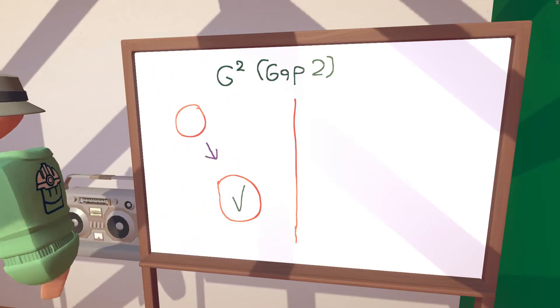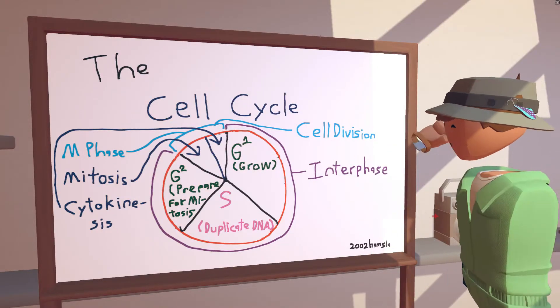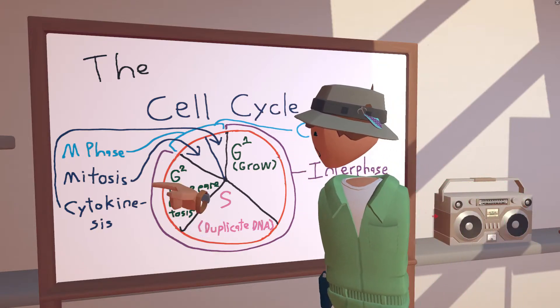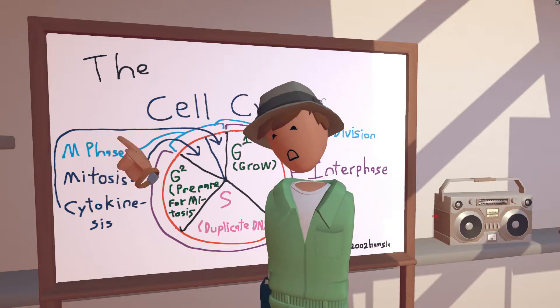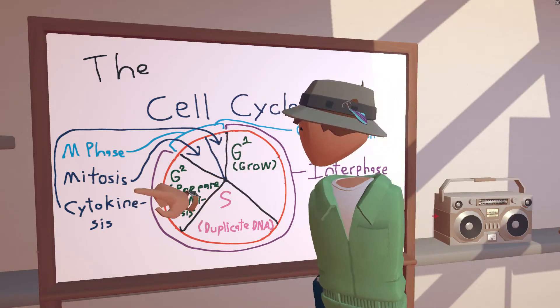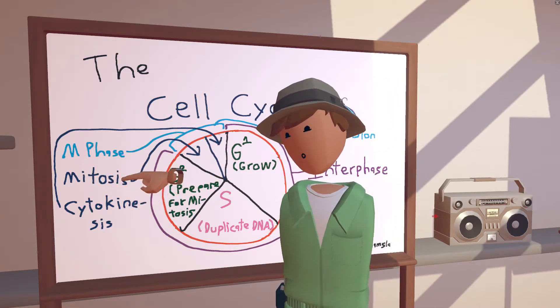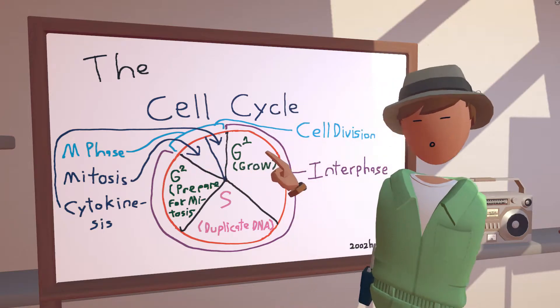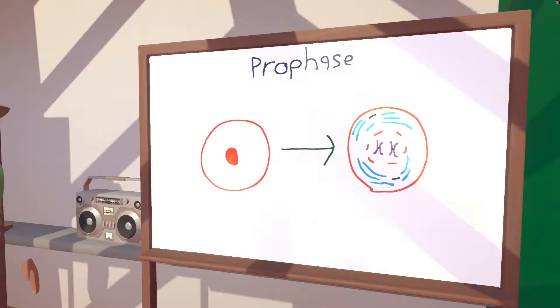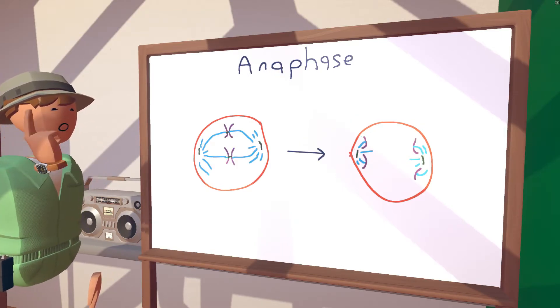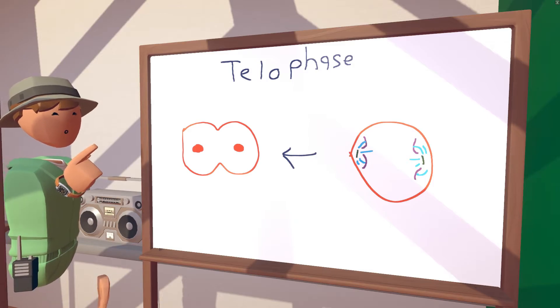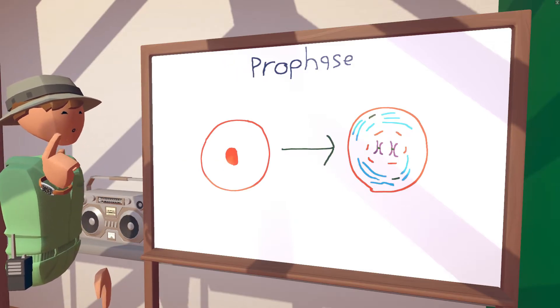And that leads us to the end of interphase, and into the beginning of cell division, or M phase, which begins with mitosis. So in mitosis, there are four main phases, which are prophase, metaphase, anaphase, and telophase, in that order. So let's start with the first one, prophase.